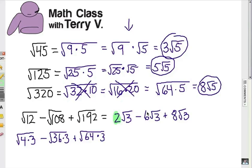Now I see these constant factors on the outside? That's what we can combine together. So now we need to think. What's two, take away six, plus eight? That's right, final answer is four radical three.